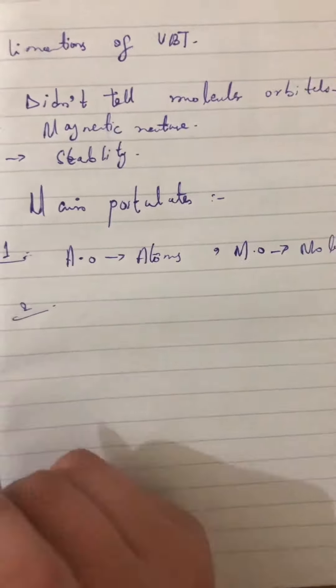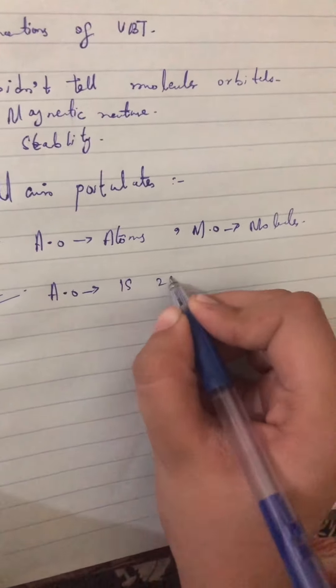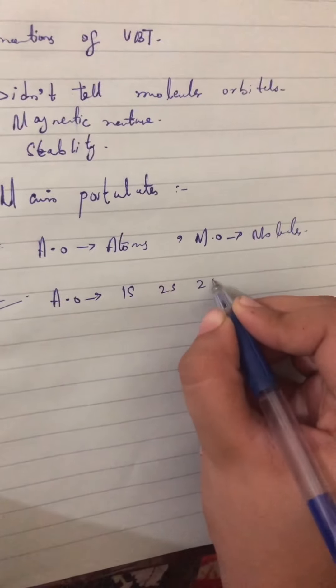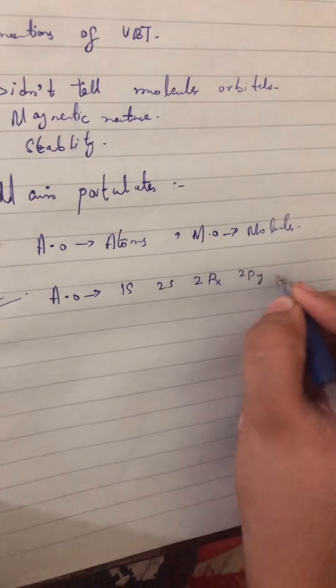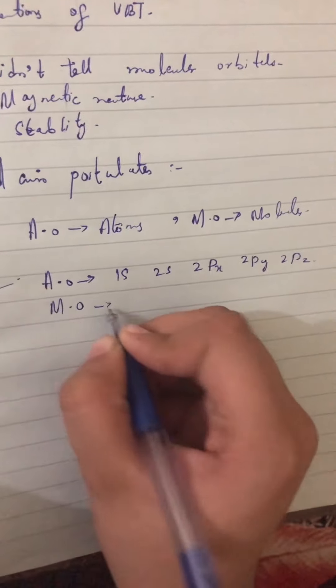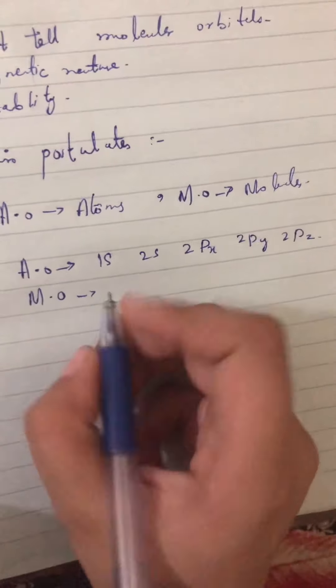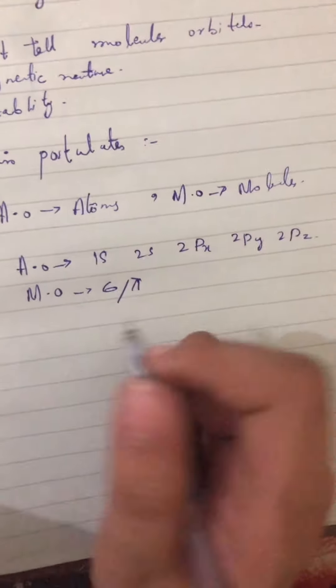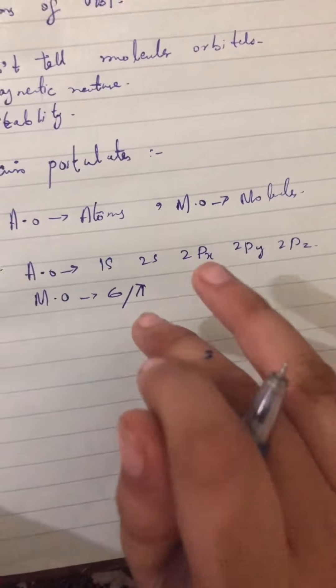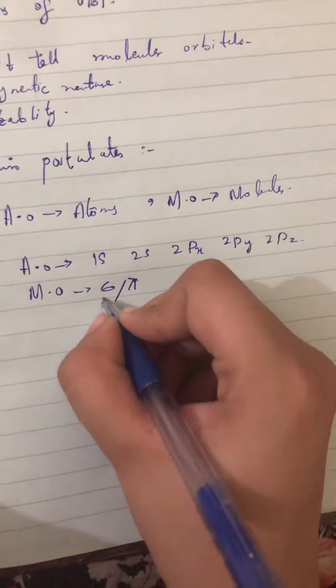The second postulate concerns electronic configuration. For atomic orbitals, the configuration is 1s, 2s, 2px, 2py, 2pz. But for molecular orbitals, we have two types: sigma molecular orbitals and pi molecular orbitals, and we use these for the electronic configuration.